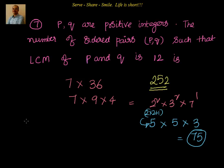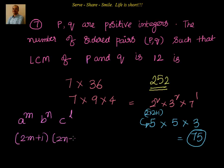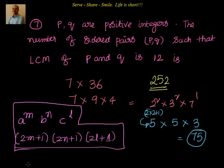The general formula is: if the LCM equals aᵐ × bⁿ × cˡ, then the total number of ordered pairs is (2m+1) × (2n+1) × (2l+1). This is the formula you can note down to solve these types of problems.